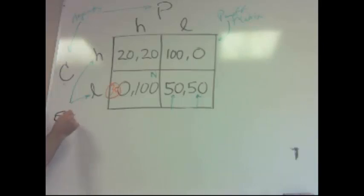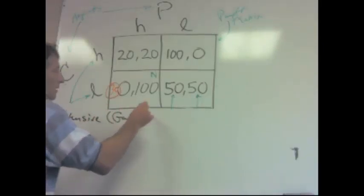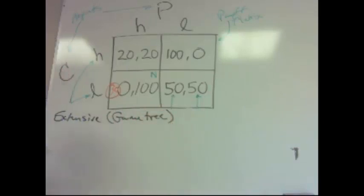Extensive form is the game tree. You set it up so each player can run it vertically or horizontally—it doesn't really matter. You come to these nodes which we call decision nodes, and that's where your choices are lined up.